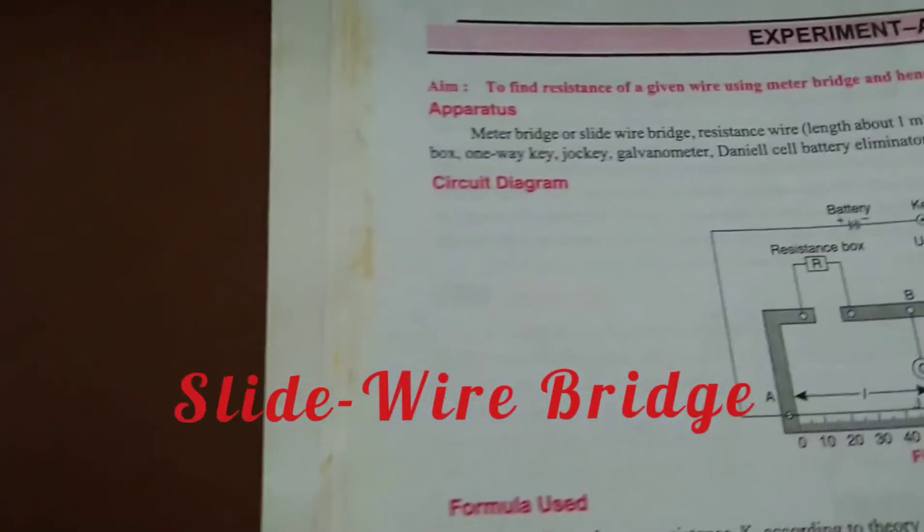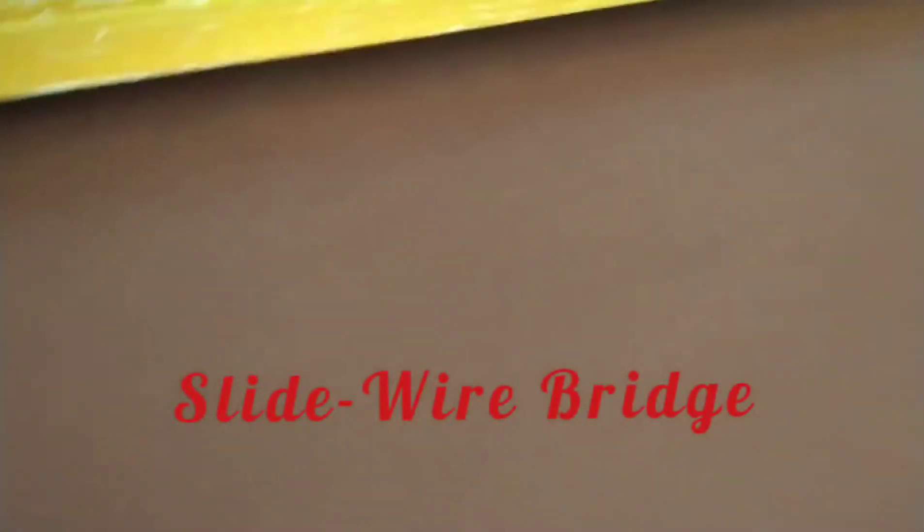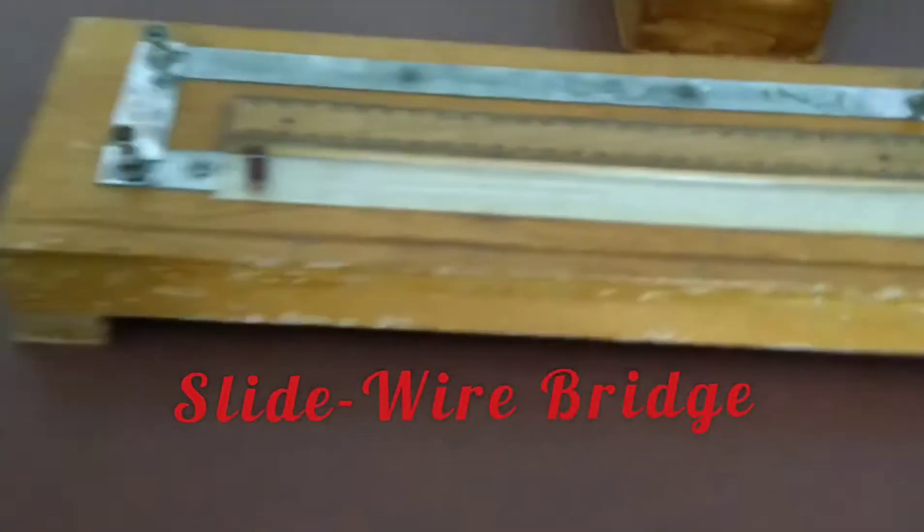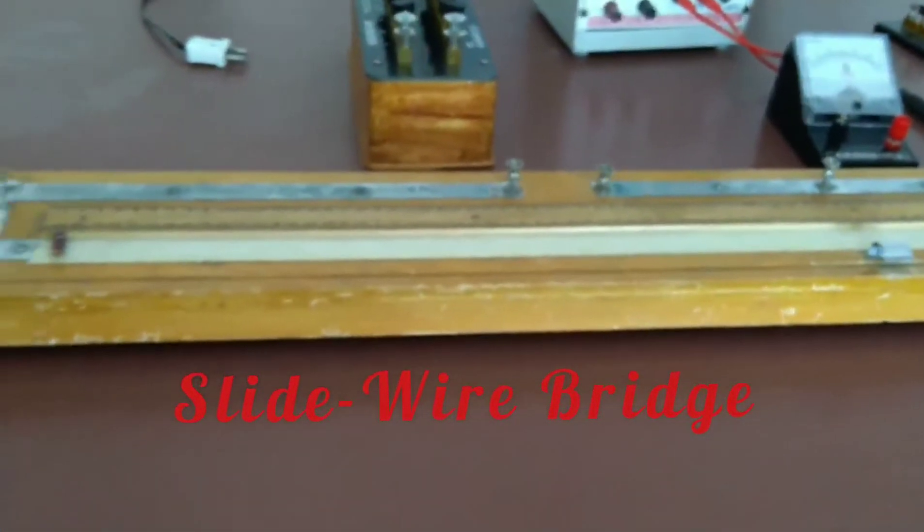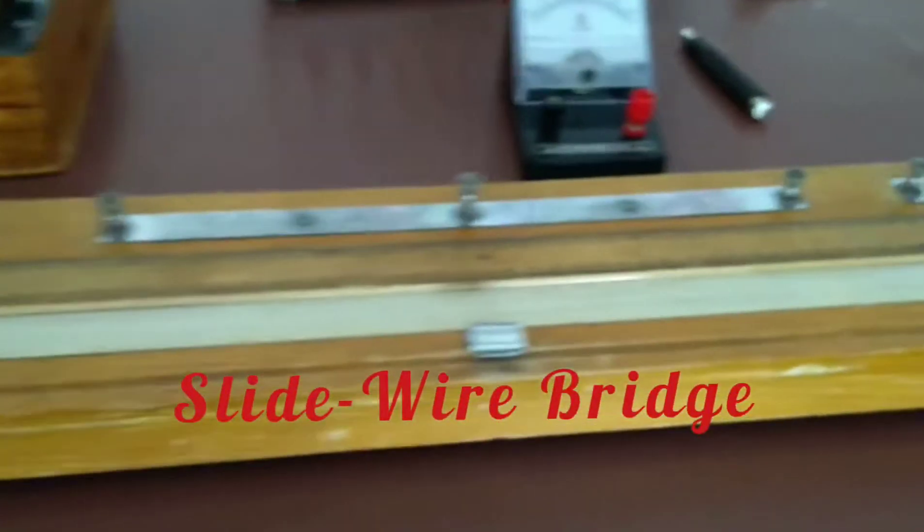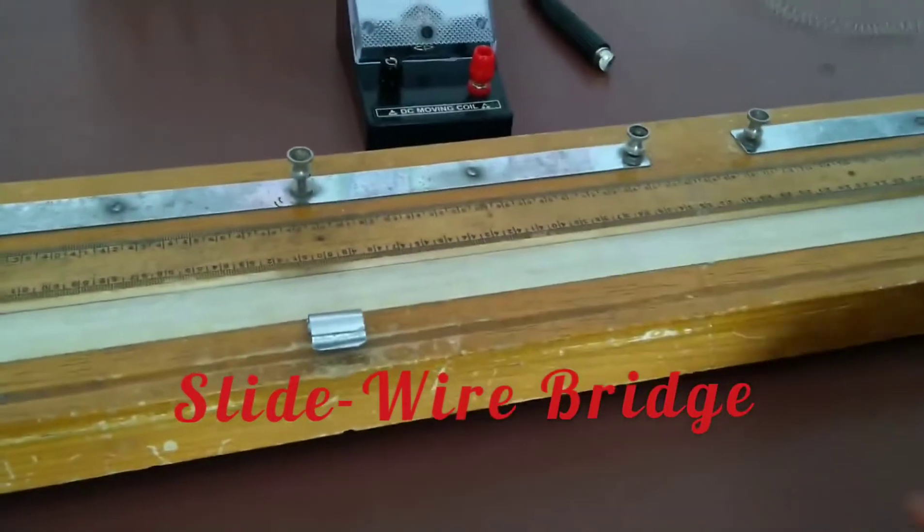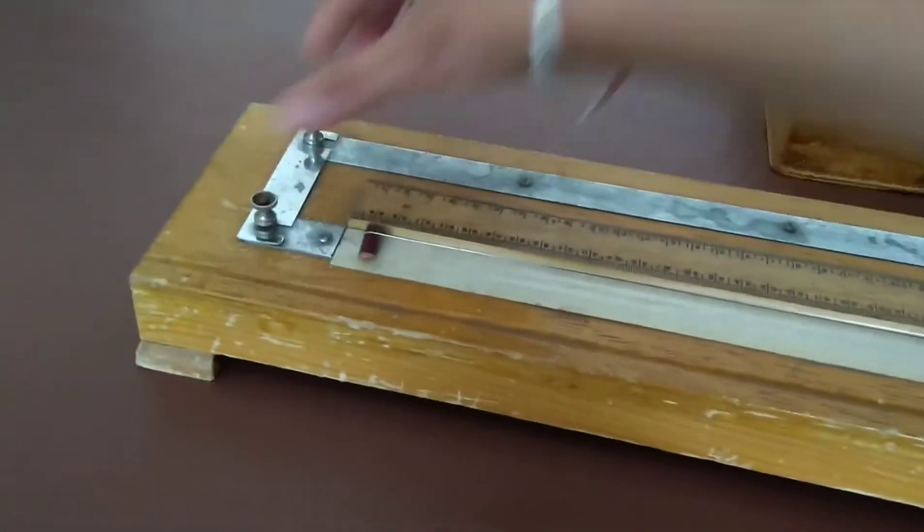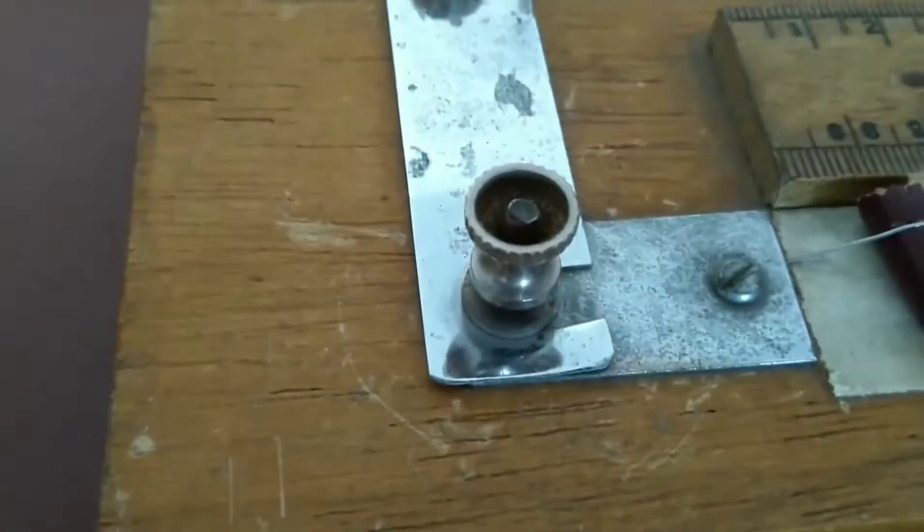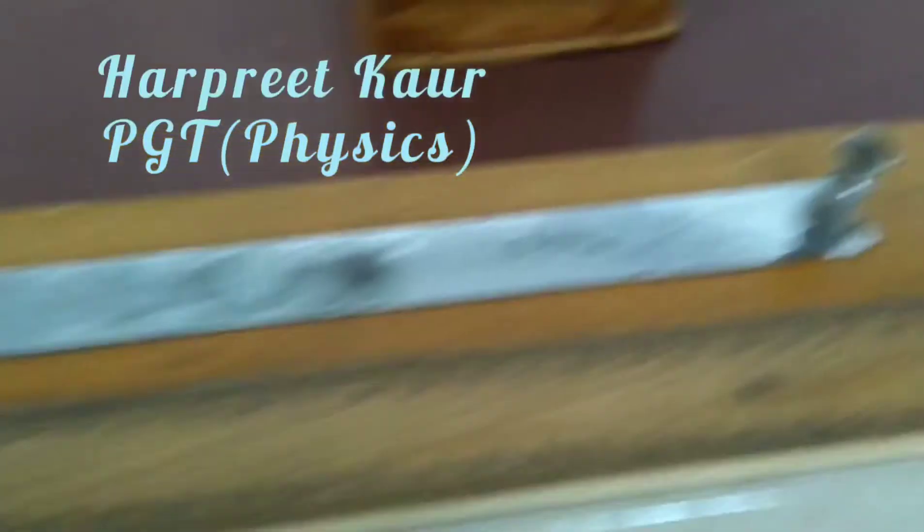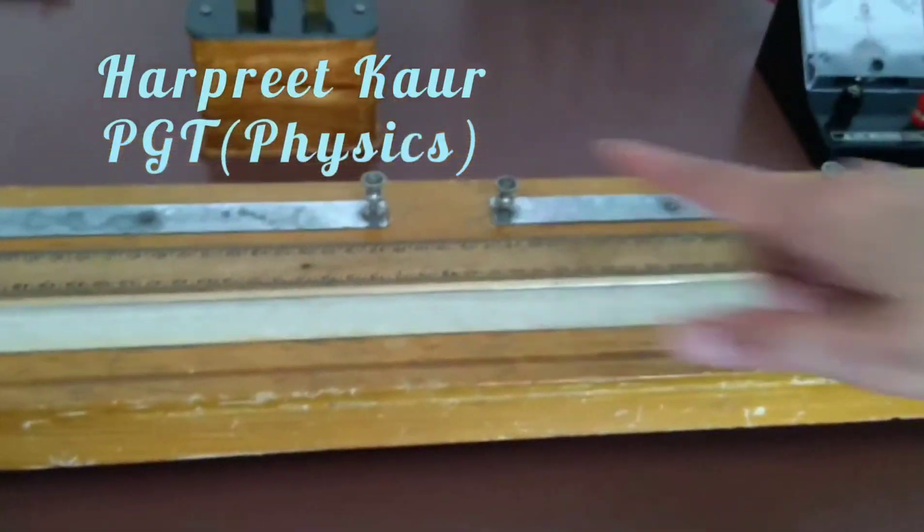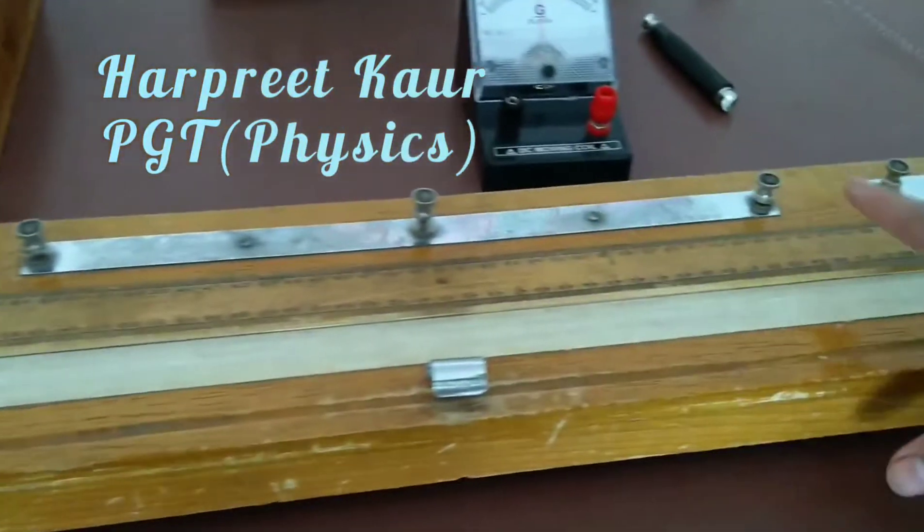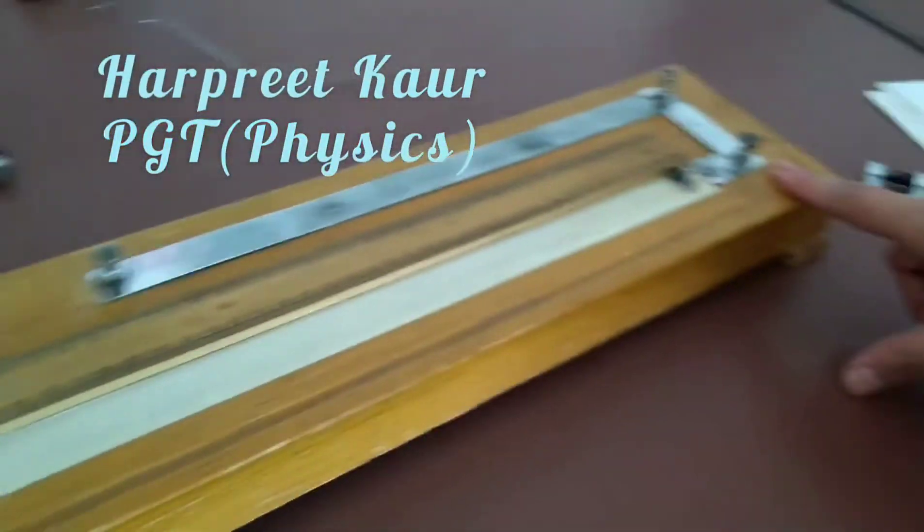For doing this experiment we need different apparatus. This is our meter bridge which has one meter wire and a scale parallel to it, wooden board, three copper strips with these ends, gaps, central end, second gap and the second terminal.